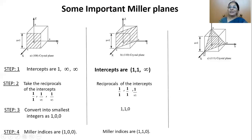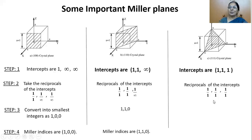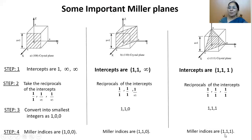Next example: a plane intersecting on X, Y, and Z axes. The intercepts are 1, 1, 1. The reciprocals are 1/1, 1/1, 1/1. The reduced numbers are 1, 1, 1. So the Miller Indices for this particular plane is (1 1 1). I hope you have understood the logic of finding Miller Indices for a given plane. Miller Indices are three small numbers indicating the plane in the crystal.